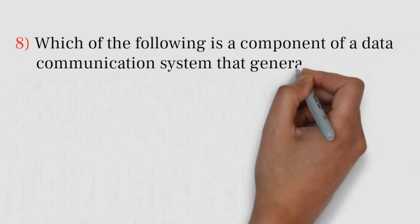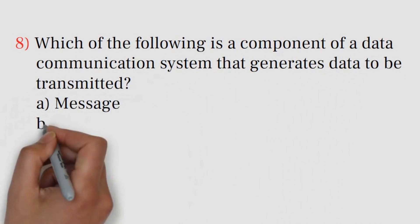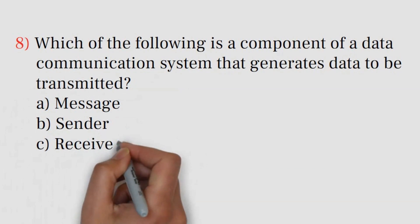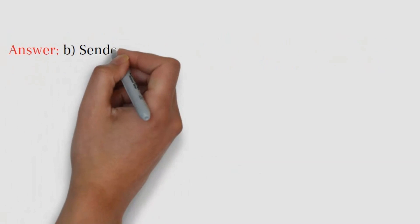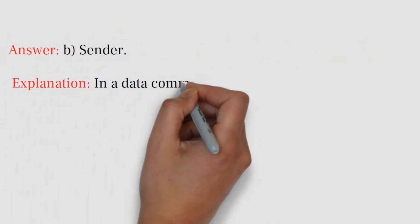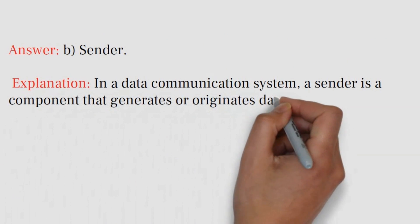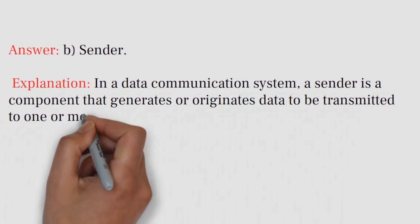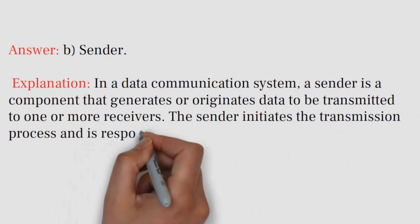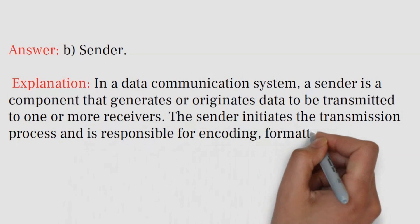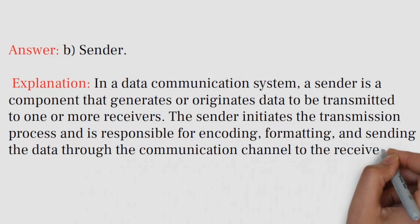Question number eight: Which of the following is a component of a data communication system that generates data to be transmitted? A) Message, B) Sender, C) Receiver, D) Transmission Medium. Answer: B) Sender. Explanation: In a data communication system, a sender is a component that generates or originates data to be transmitted to one or more receivers. The sender initiates the transmission process and is responsible for encoding, formatting, and sending the data through the communication channel to the receiver.